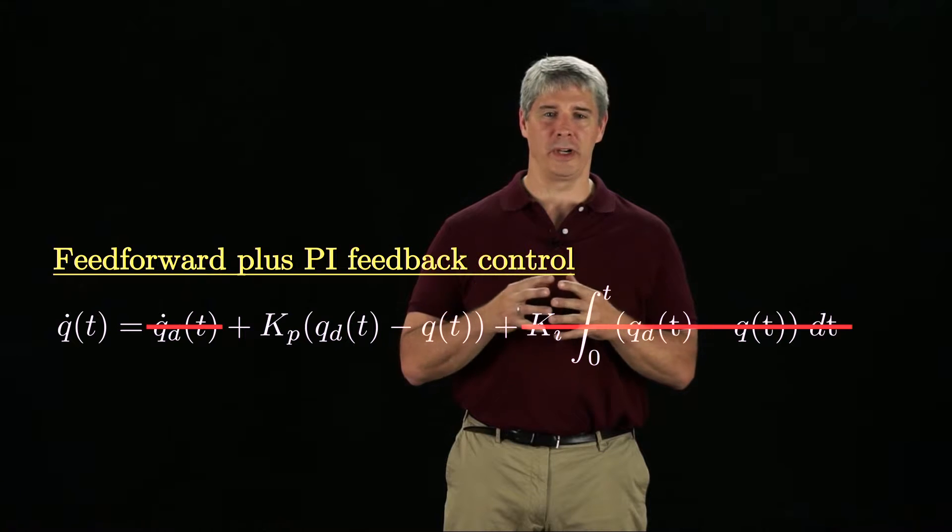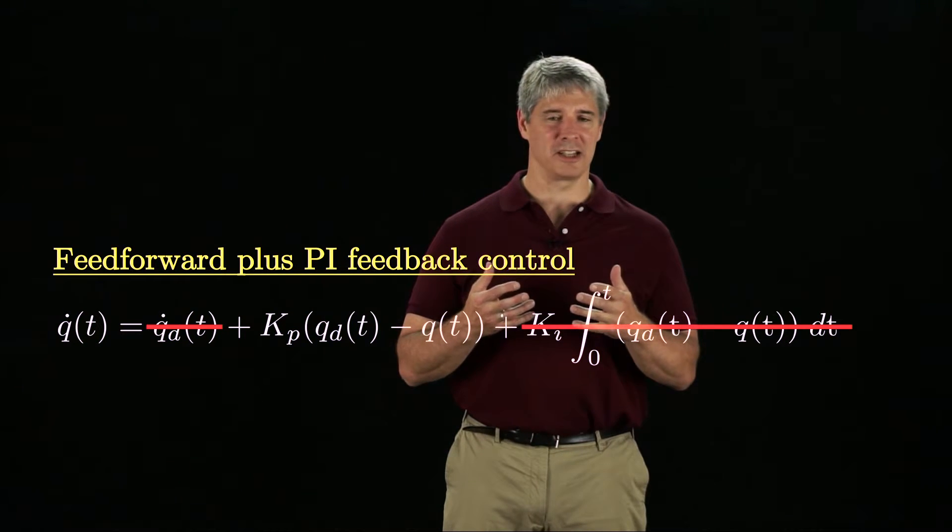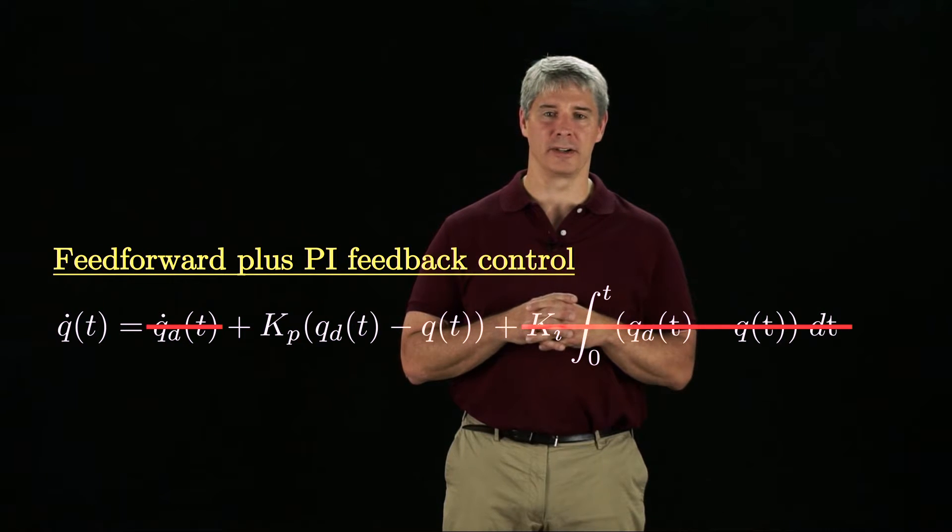For any controller, we need to estimate the chassis configuration q. The configuration can be estimated using odometry, covered later in this chapter, or using external sensors like cameras, GPS, or laser rangefinders.